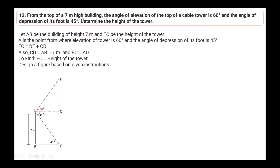Question 12: From the top of a 7-meter high building, the angle of elevation of the top of a cable tower is 60° and the angle of depression of its foot is 45°. Determine the height of the tower. Let AB be the building of height 7 meters and EC be the height of the tower. EC = DE + CD, where CD = AB = 7 meters and BC = AD.